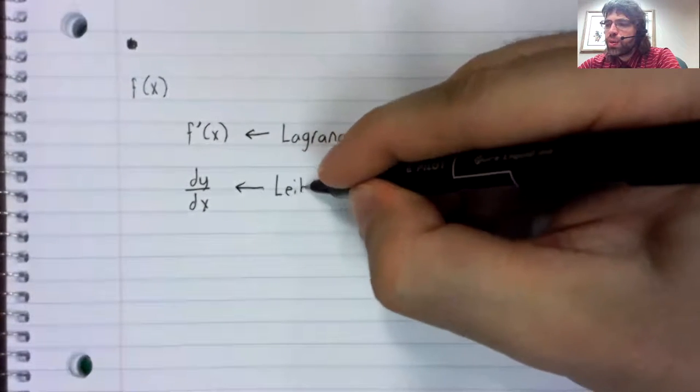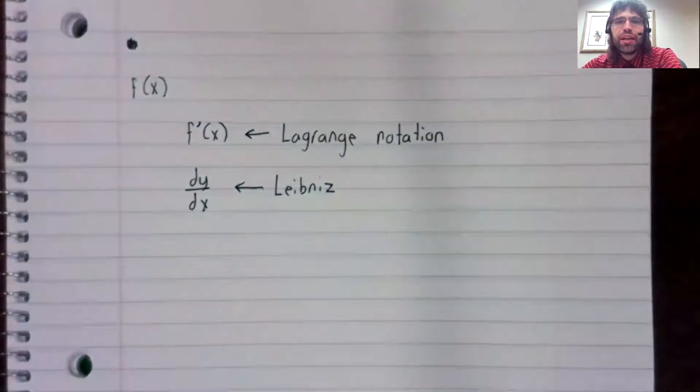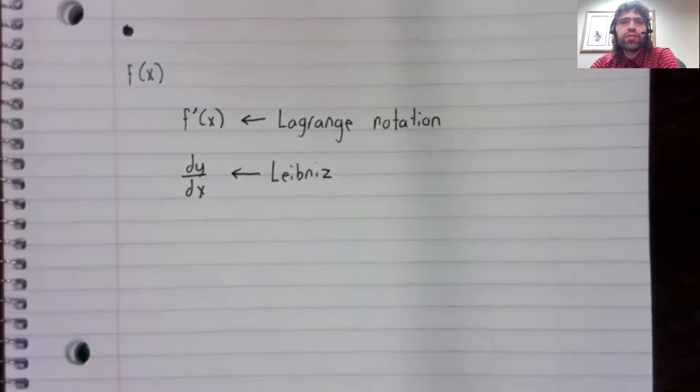This was the notation of a man named Leibniz, Gottfried Leibniz. So it's called Leibniz notation. So we have two different ways of writing the derivative.